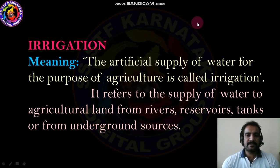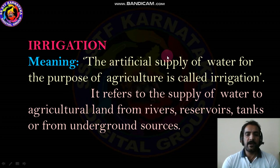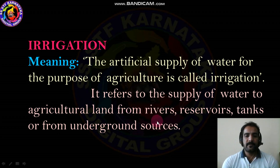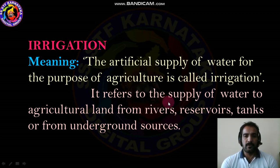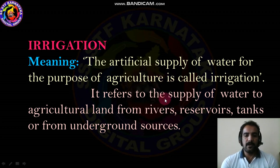Irrigation refers to the artificial supply of water for the purpose of agriculture. It refers to the supply of water to agricultural land from rivers, reservoirs, tanks, or underground sources.